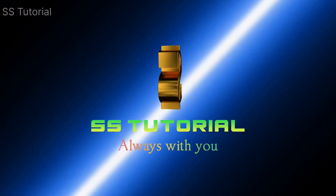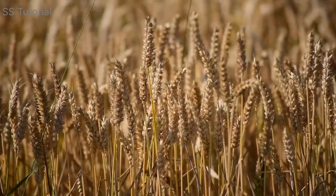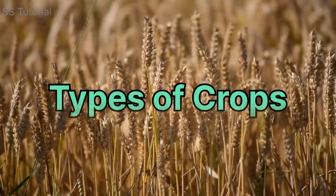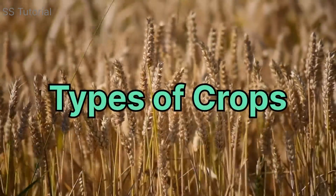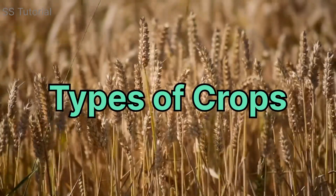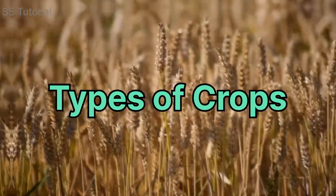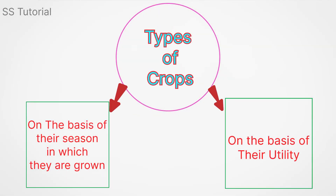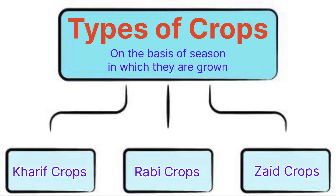Hello viewers, welcome to SS Tutorial. Today in this video we are going to discuss types of crops. Crops can be divided on the basis of the season in which they are grown, and on the basis of utility. On the basis of season, crops can be divided into three types.